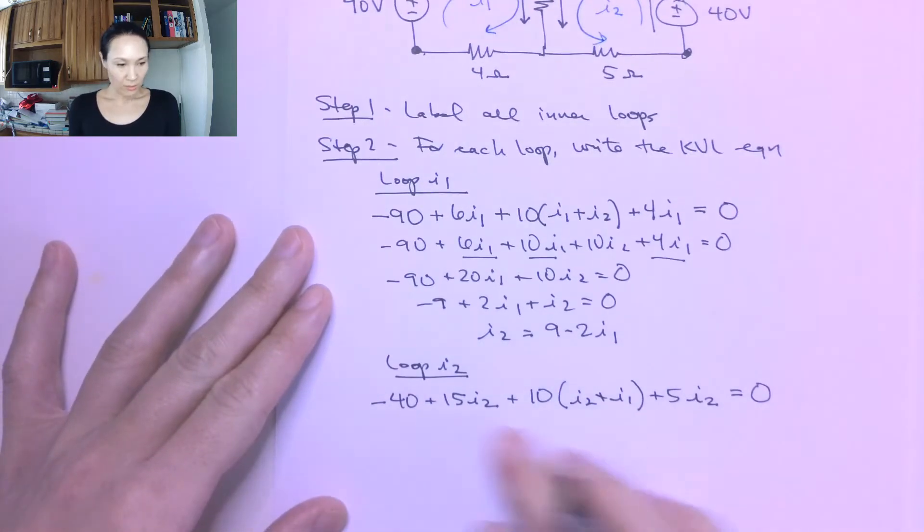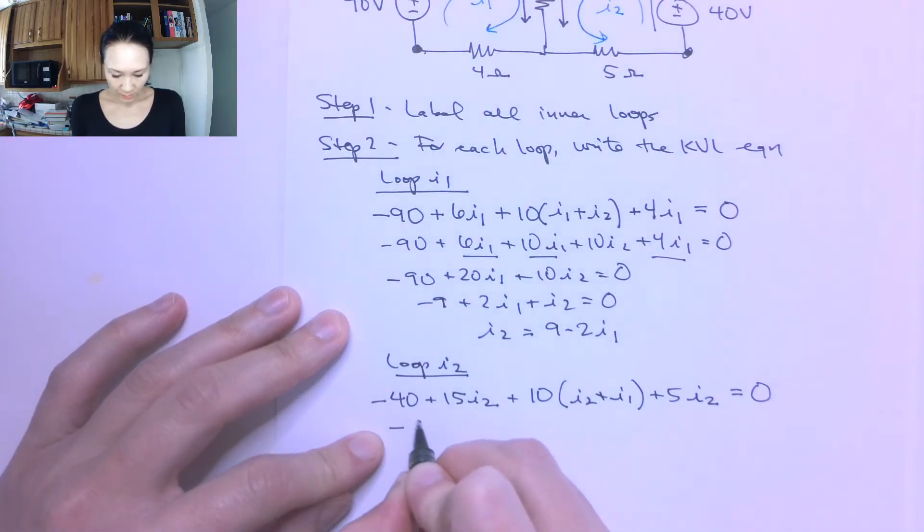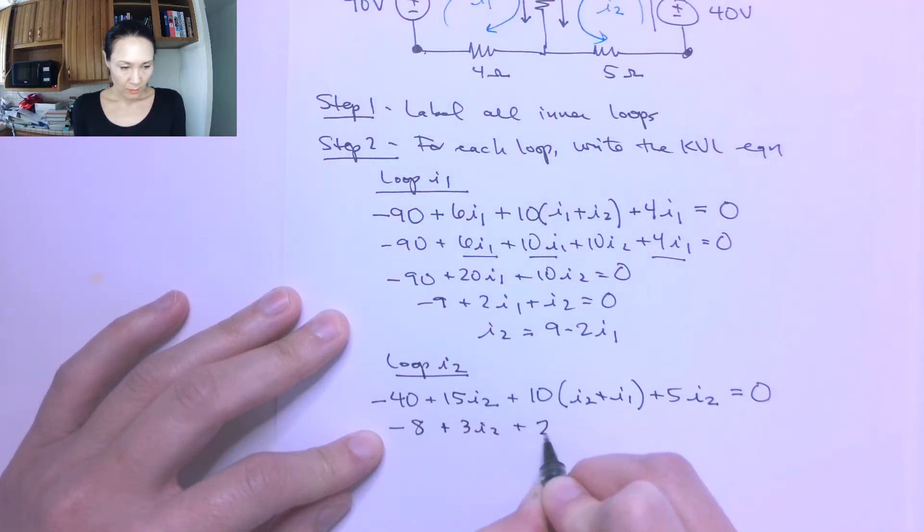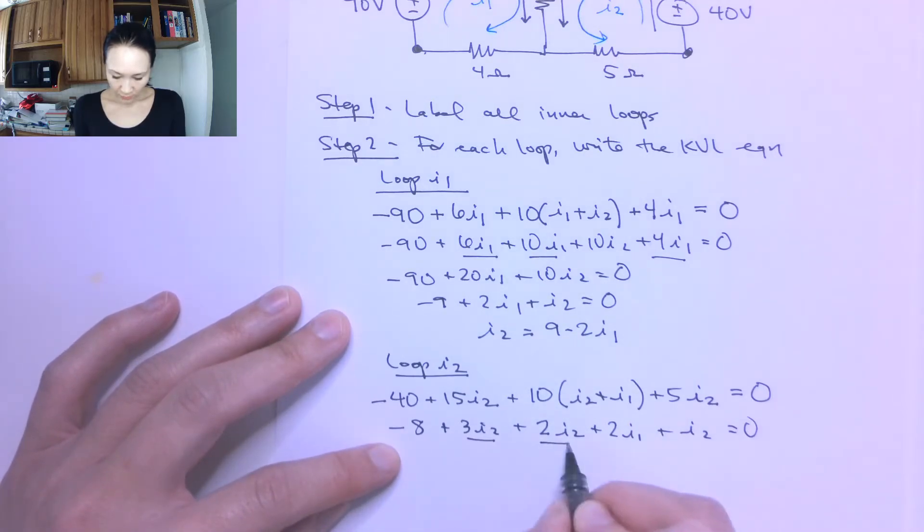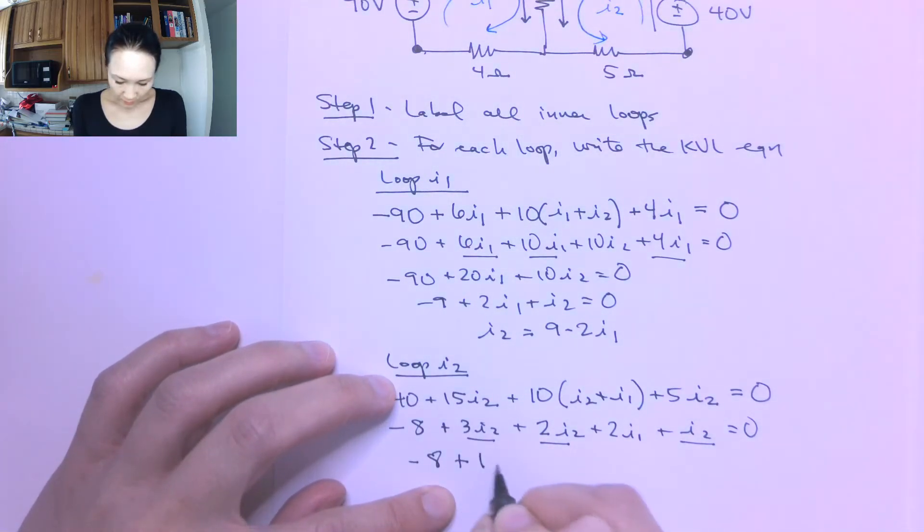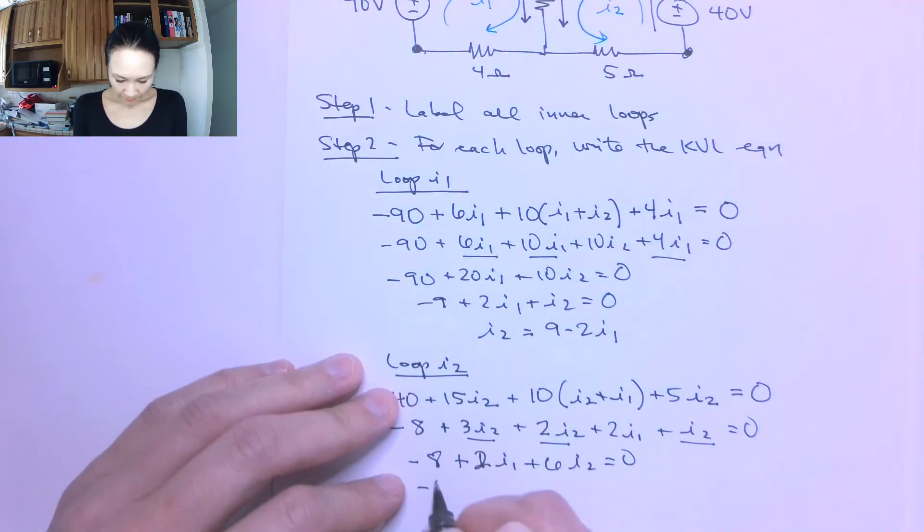So let me reduce this thing. I'm just going to divide everything by 5 to begin with. So this is negative 8 plus 3I2 plus 2I2 plus 2I1 plus I2 is equal to 0. Then I have I2 terms here, here, and here. So this gives me negative 8 plus 2I1 plus 6I2 is equal to 0. I can reduce this again. Negative 4 plus I1 plus 3I2 is equal to 0.